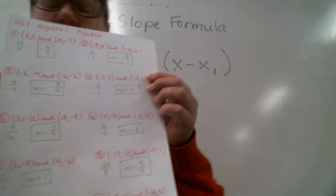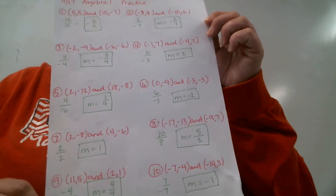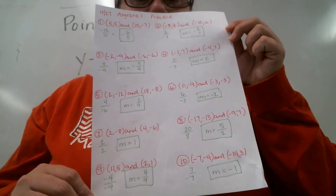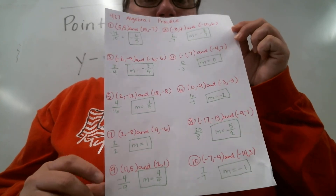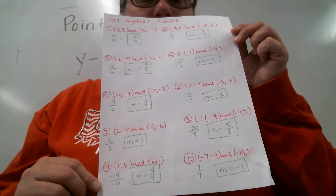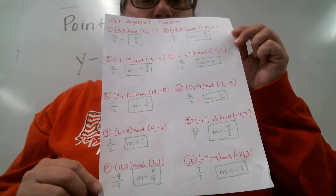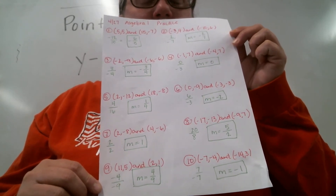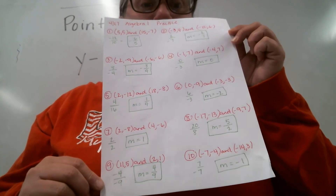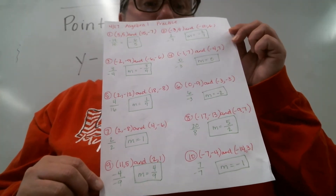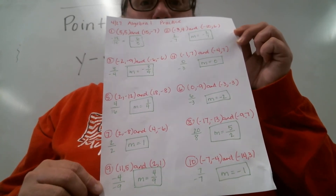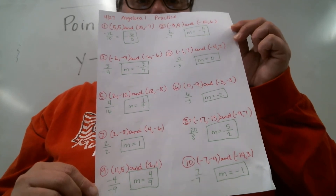Okay, this is Wednesday's video for Algebra 1. These are your solutions. Remember, you were taking two points and finding the slope from two points on any line, using the change in Y over change in X. If you find that you're getting these wrong, message me. I'll look back through your work. Make sure you're sending me pictures of your work so that I can help you if you are having trouble.